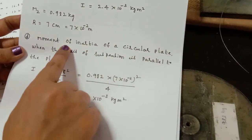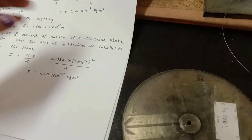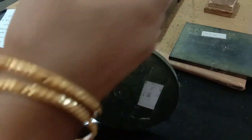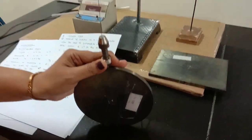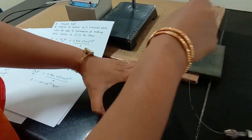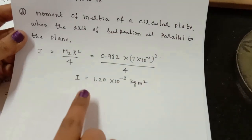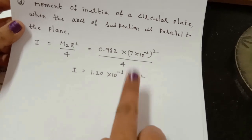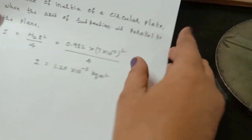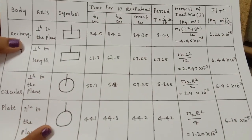We can also calculate the moment of inertia of the circular plate when the axis of suspension is parallel to the plane — the wire is suspended differently in this case. The formula for this configuration is I = m₂r²/4. We have now calculated the moment of inertia of both plates for different axes of suspension.